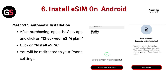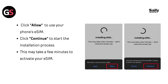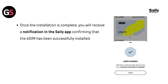Install eSIM on Android — Method 1: Automatic Installation. After purchasing, open the Selly app and click on Check Your eSIM Plan, then click Install eSIM. You will be redirected to your phone settings. Click Allow to use your phone's eSIM, then click Continue to start the installation process. This may take a few minutes to activate your eSIM. Once the installation is complete, you will receive a notification in the Selly app confirming that the eSIM has been successfully installed.